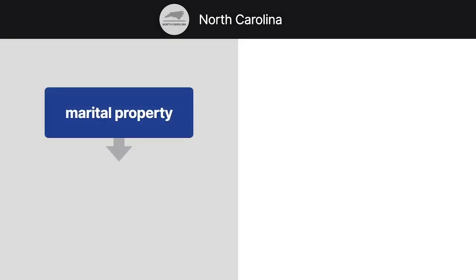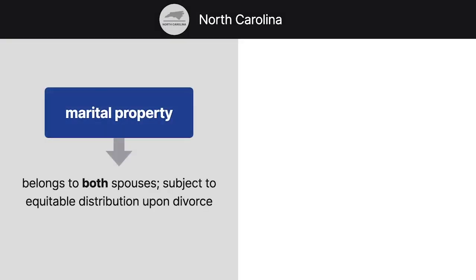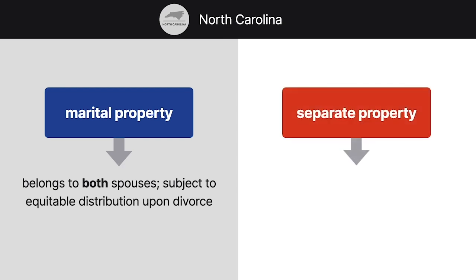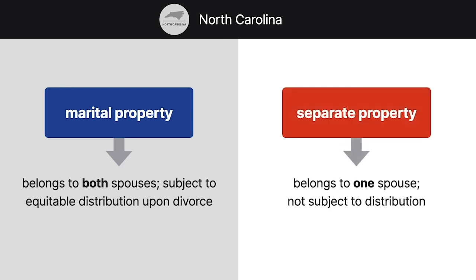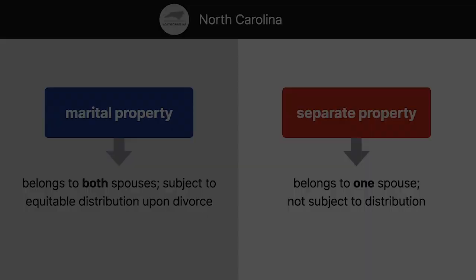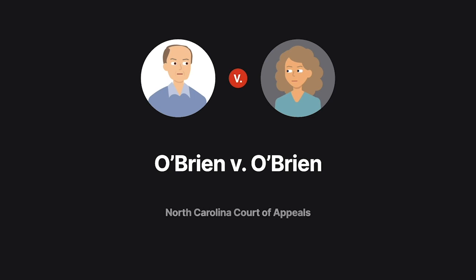In North Carolina, marital property belongs to both spouses and is subject to equitable distribution upon divorce. But separate property belongs to one spouse and isn't subject to distribution. In O'Brien v. O'Brien, we explore how courts distinguish between marital and separate property.